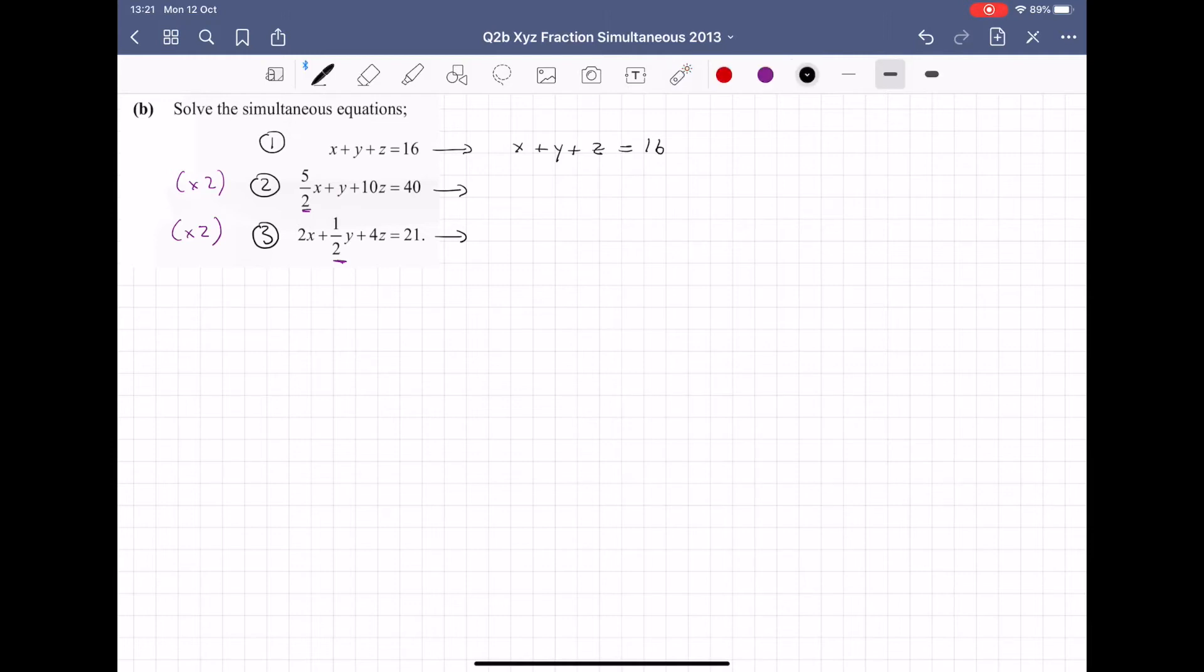So I can't just multiply the x piece by 2. I must multiply every piece of it to preserve the equation. And once I do it to it all, then it's perfectly okay to do it. So 2 times 5 over 2 will give me 5x plus 2 by 1y is 2y, 2 by 10z is 20z equal to 80. And then equation 3, 2 by 2x is 4x plus 2 times 1 half is 1y plus 8z being equal to 42.